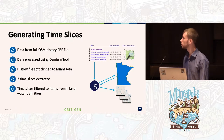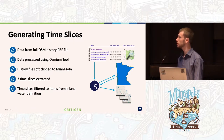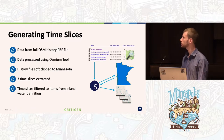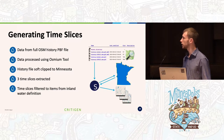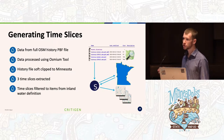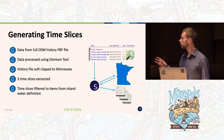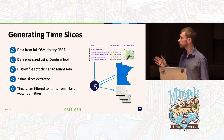We generated these time slices by starting with a full OSM history file in PBF format and processed everything with Osmium Tool, an open source OSM file manipulation program that works great with history files. We started with a soft clip to Minnesota — anything intersecting or overlapping the area — then extracted the three time slices for 2009, 2011, and 2019. Finally, we filtered each time slice to include only items with tags from our water definition, plus a few extra nodes to maintain full geometry. This gave us three PBF files, one per time slice, each with all Minnesota water data for that time.